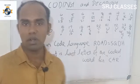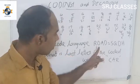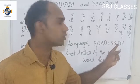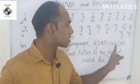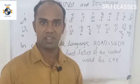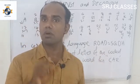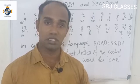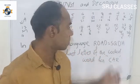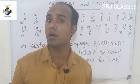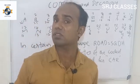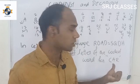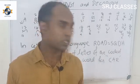In a certain code language, a word is coded. For example, the word 'CAR' is coded as 'SQDH'. Here the coded word is given. We call this the first coded word. Let's take the letters: C, A, R — and find how each letter maps to the code.